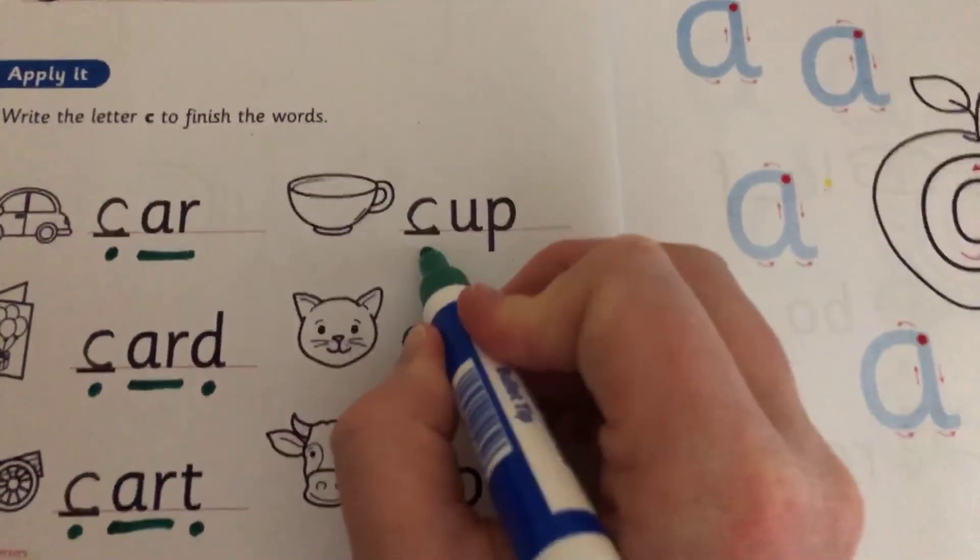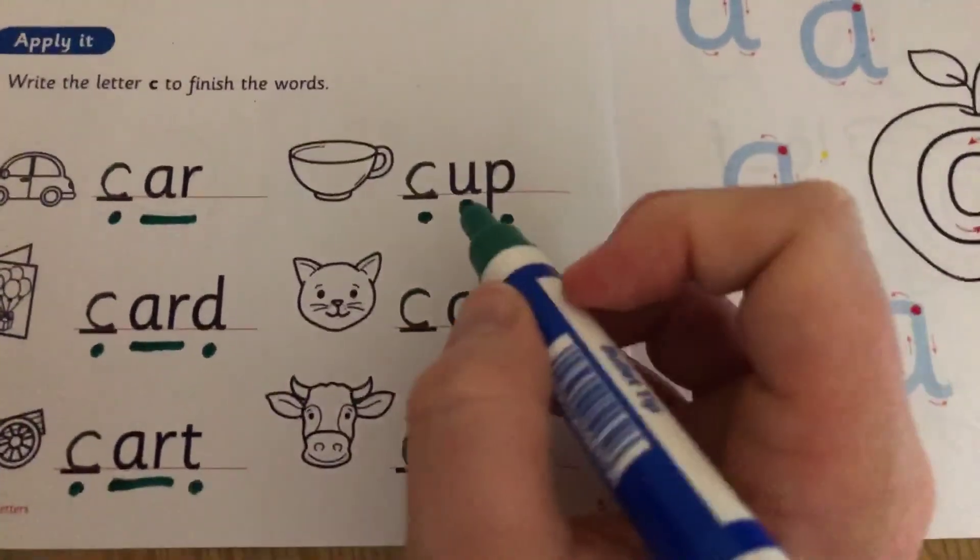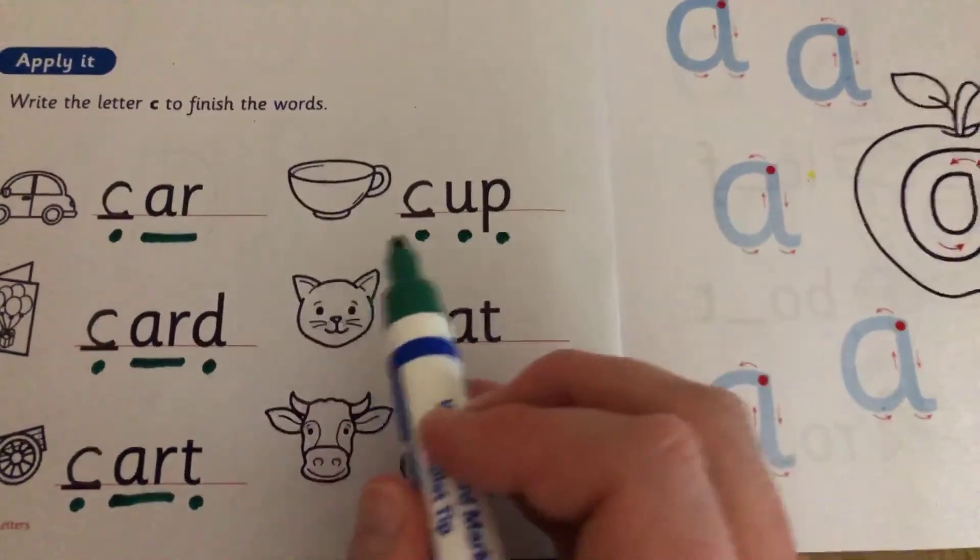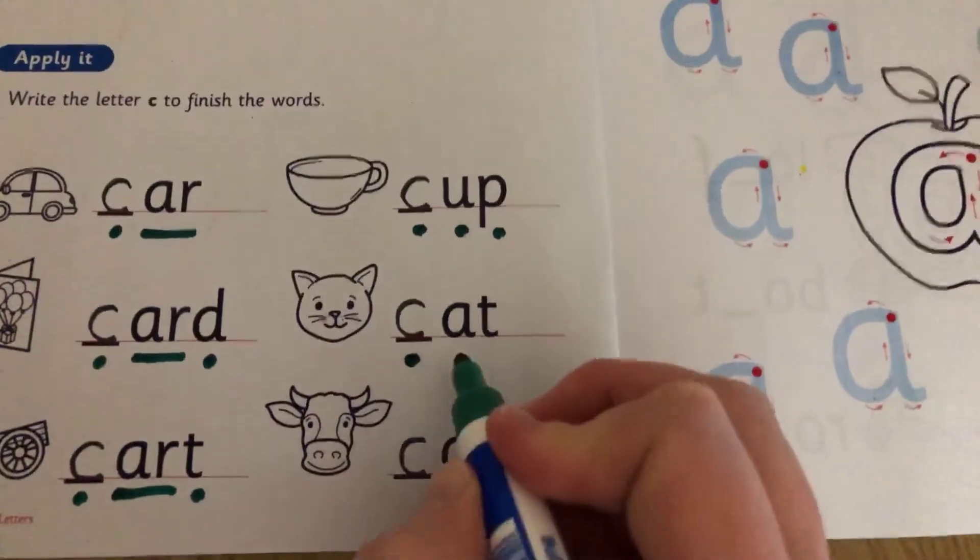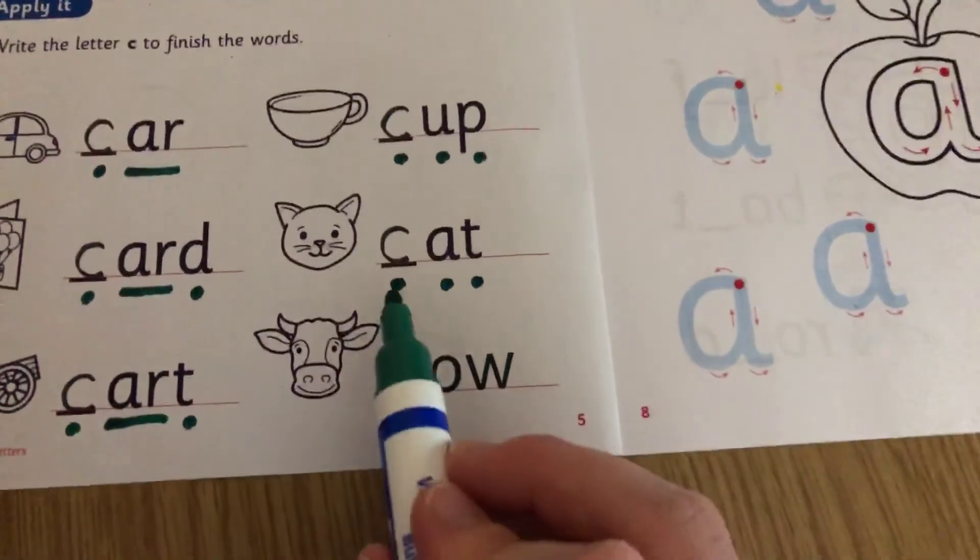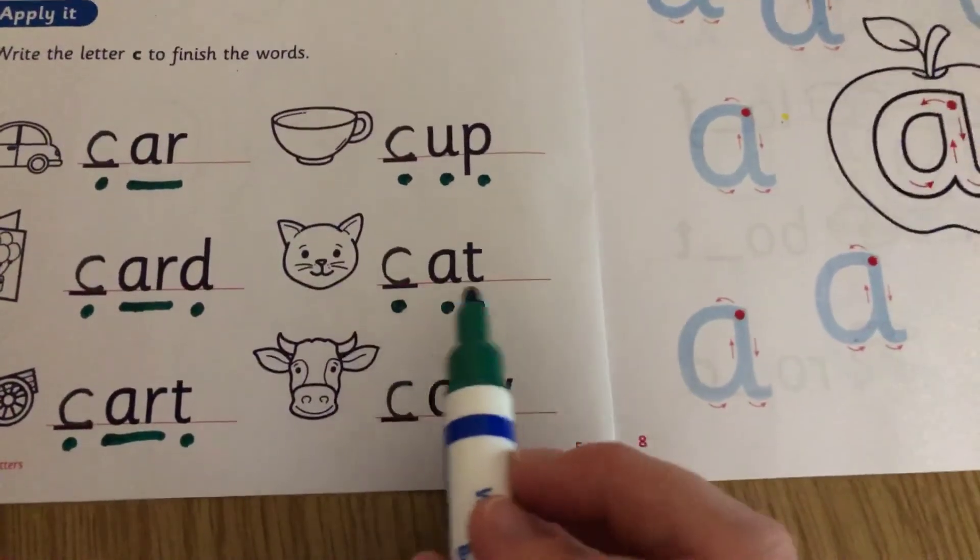That's a nice, simple one. Read that one. C, U, P, cup. This one here, I know you can all do. Quickly do it. C, A, T, cat.